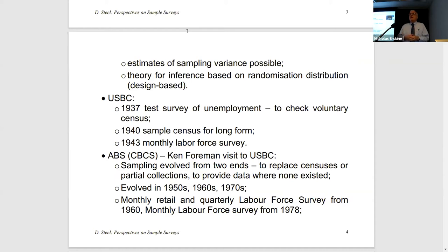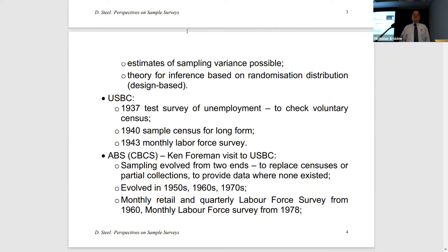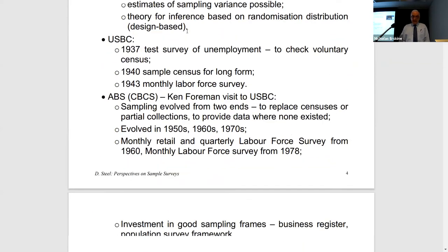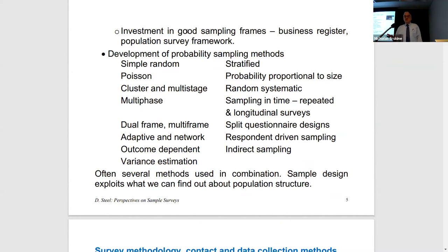There were developments even then to further use sampling, and the best thing that ever happened at ABS is when budget cuts forced people to introduce sampling to save money. The monthly retail survey and the quarterly labor force survey were introduced around 1960, and the monthly labor force survey was introduced in 1978 — I think we were the fourth country in the world with a national monthly labor force survey, after the US, Canada, and Japan. What ABS was really doing was investing in sampling frames — the business register and the population survey framework — the two assets enabling high-quality surveys of businesses and households.